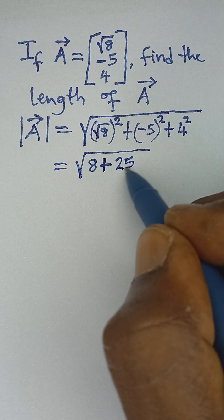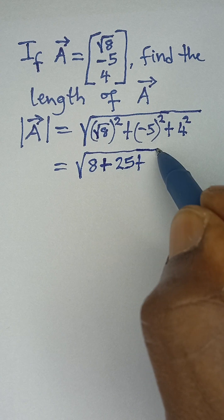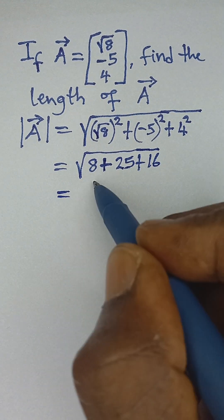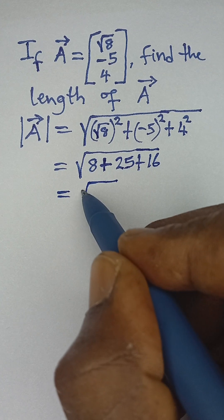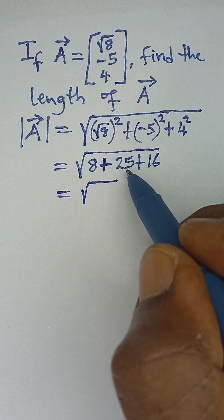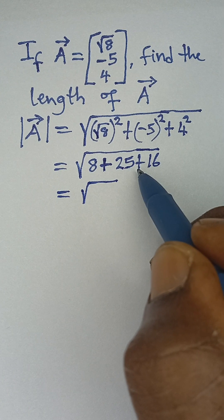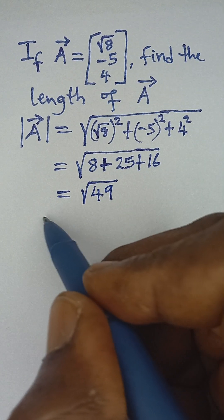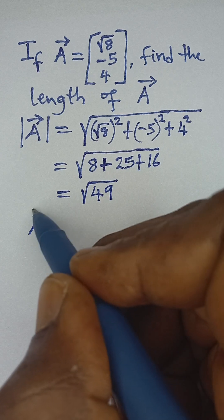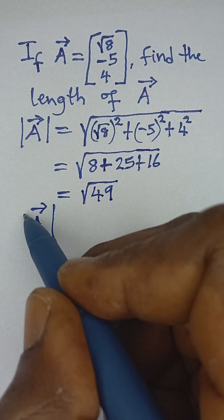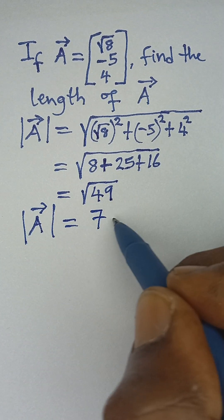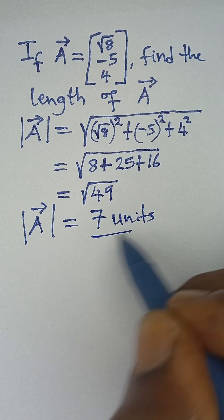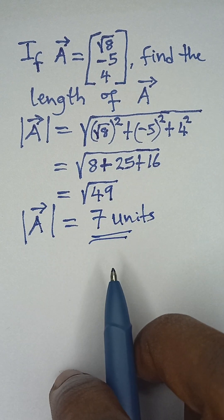Plus the square of 4, which gives us 16. So we are left with the square root of 8 plus 25 is 33, and 33 plus 16 is 49. The square root of 49 gives us the length of a equal to 7 units. This is the final answer.